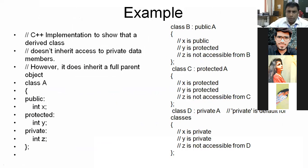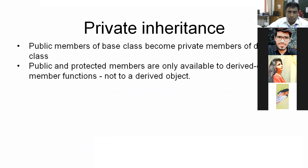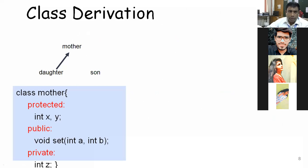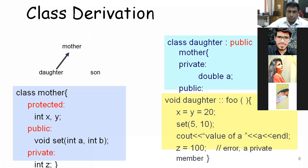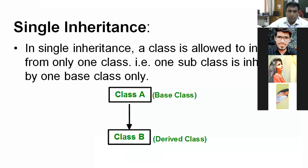We have already seen examples of public, protected, and private inheritance. Now we will see some examples of private inheritance and protected inheritance.